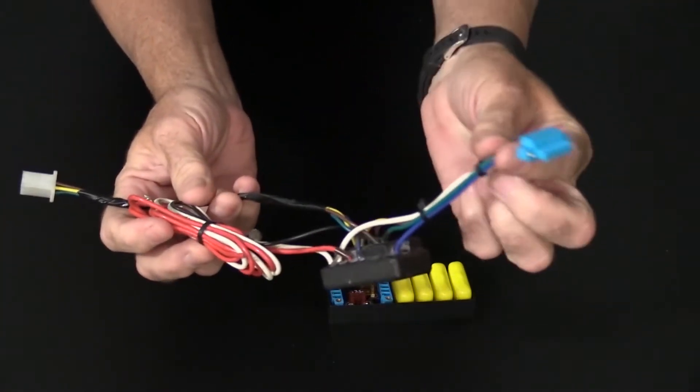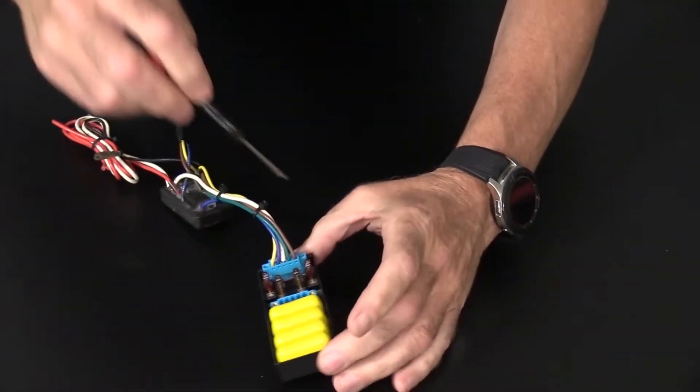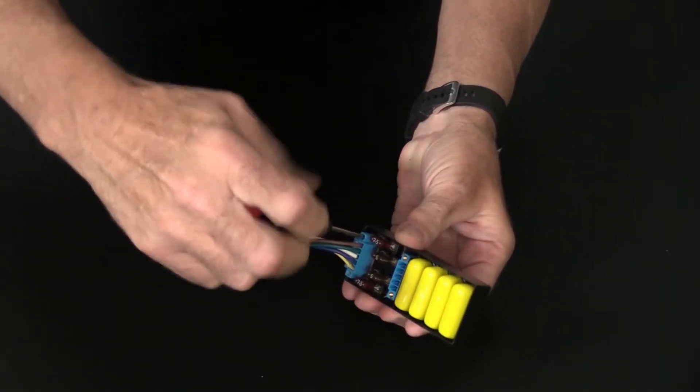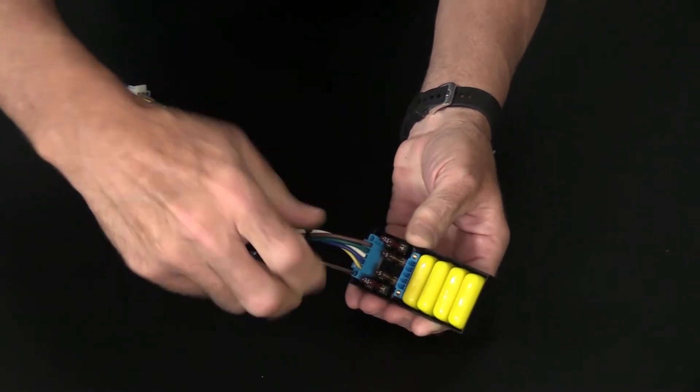Use a small flat tip screwdriver to tighten the two screws. Each of the four channels is rated at 10 amps.